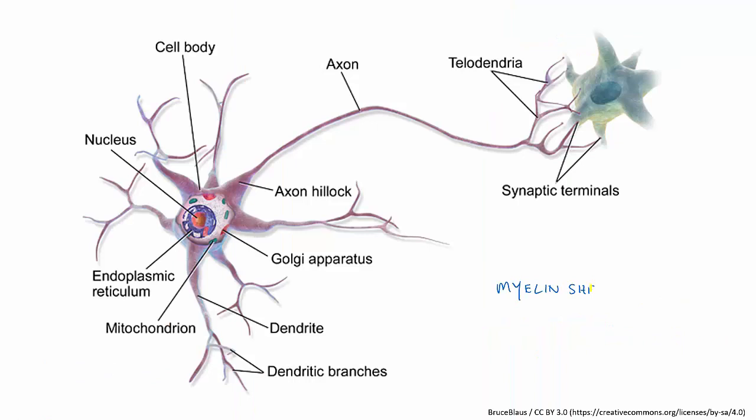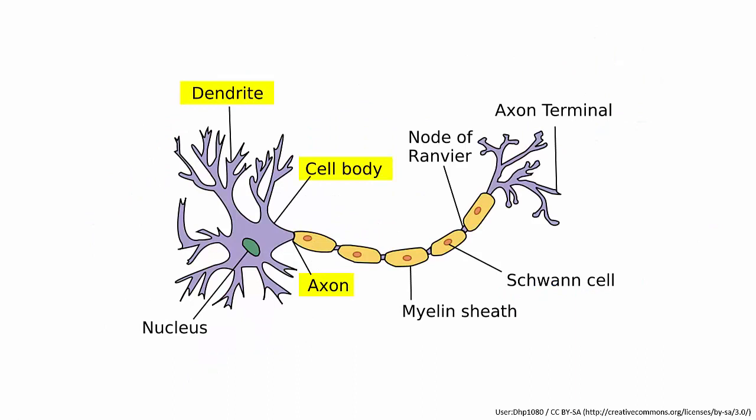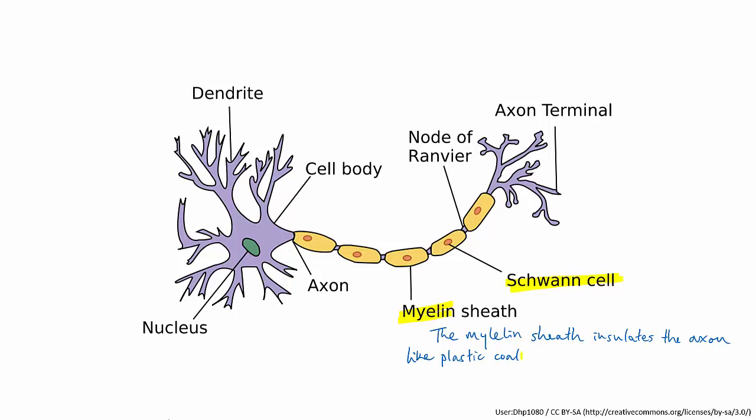One last thing to look at is the myelin sheath. The sheath is not shown in the previous diagram, so let's switch to this cartoon of a neuron. You can see the same basic structure with the cell body, the dendrites, and the axon. But here you can see that the axon is covered by a layer of fatty cells known as Schwann cells. The fatty substance in the Schwann cell is called myelin, and together the cells are known as the myelin sheath. This protective layer around the axon is really important for the function of the neuron, because it helps the nerve signal to travel fast and accurately down the axon.